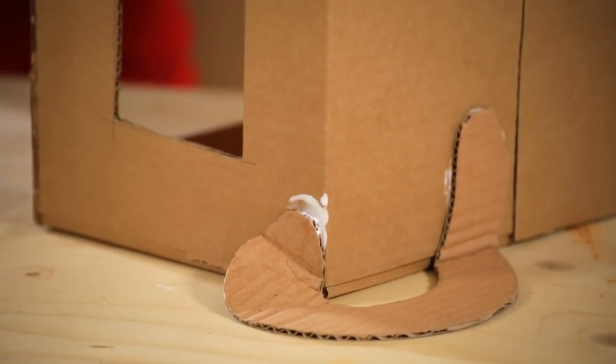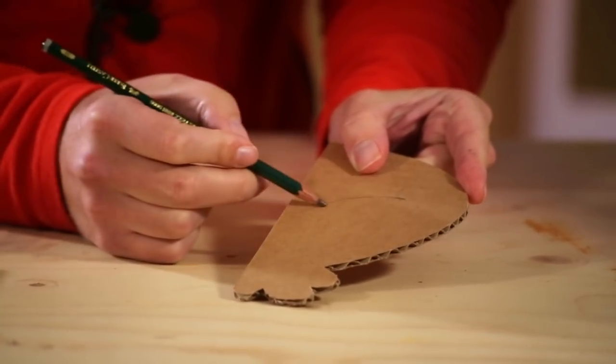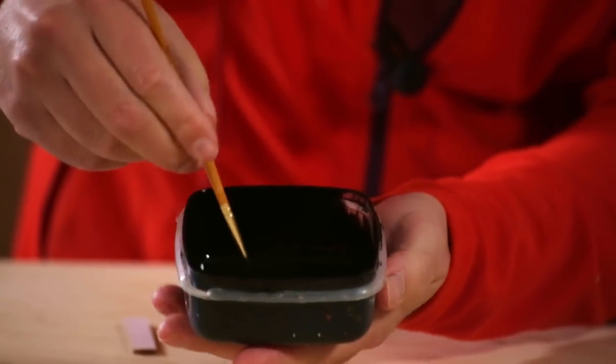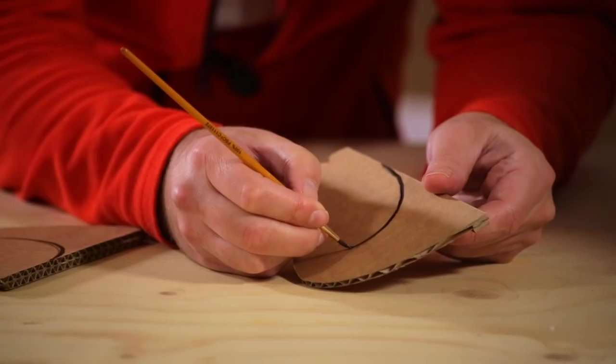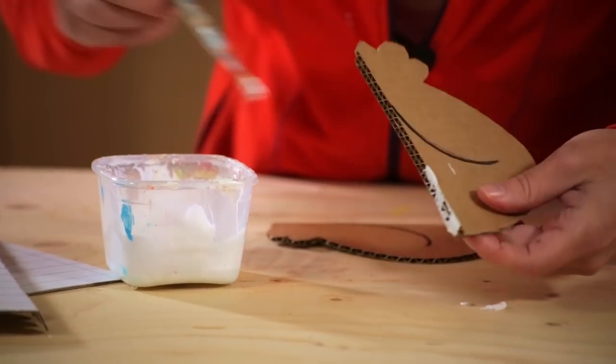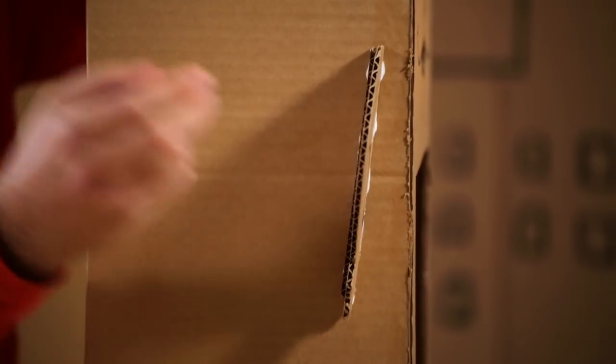But before we glue it all together, let me just add a little line here for the forearm of the cat. Paint it in. Okay, let's glue. Plenty of glue. On it goes, add a slight angle, a bit like this.